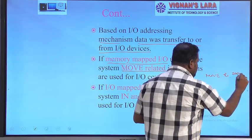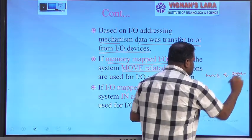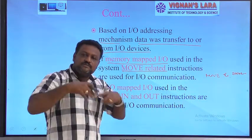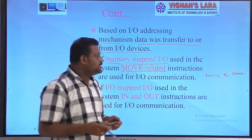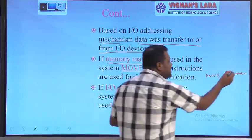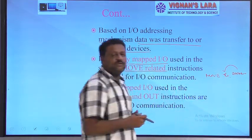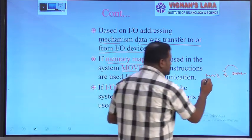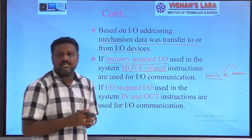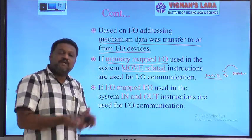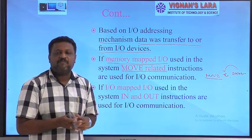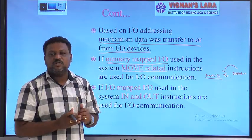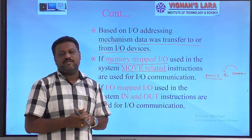To read data from an input device, it uses a MOV-related instruction. For example, 'MOV data_in' — where data_in is one of the internal registers of the input device — transfers that data to a CPU register. In memory-mapped I/O, the CPU uses the same MOV-related instructions to communicate with I/O devices.